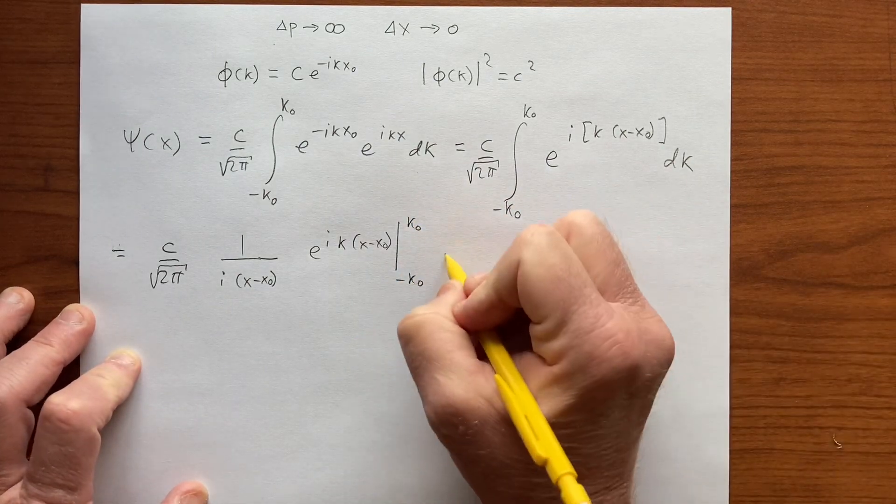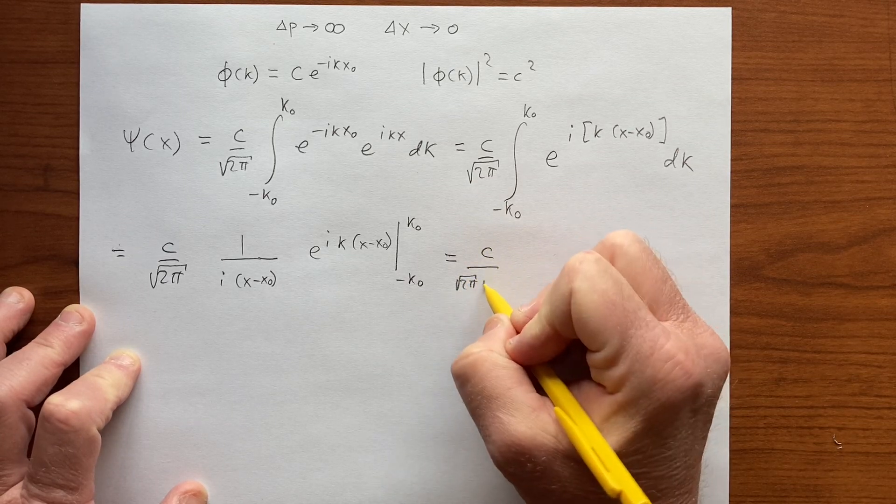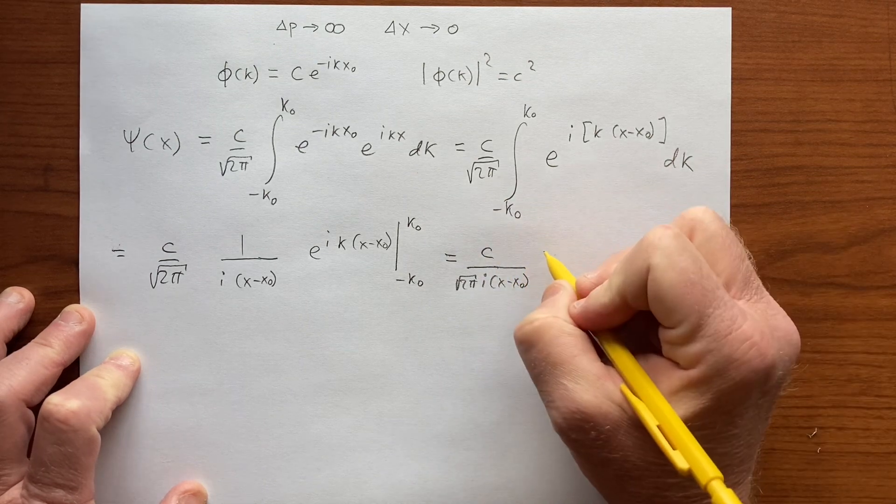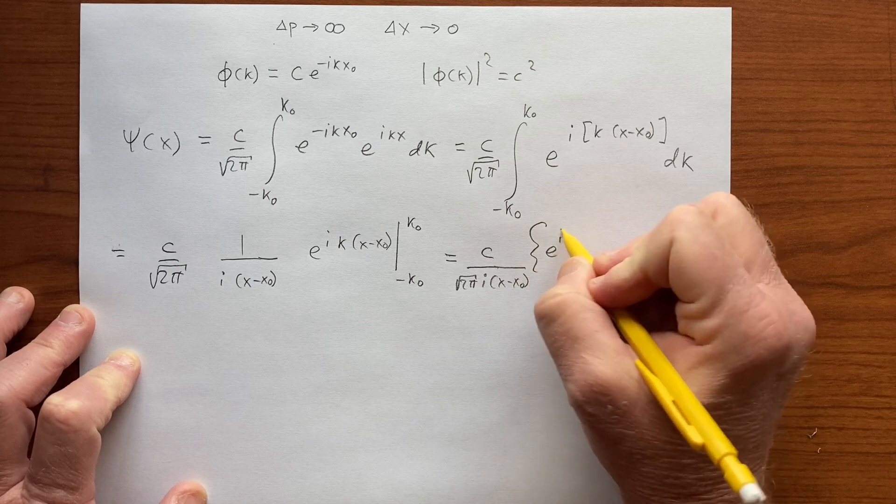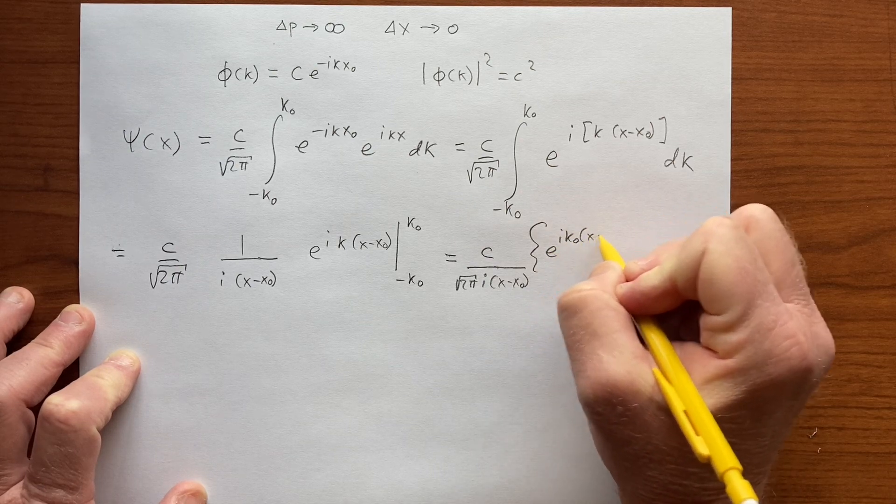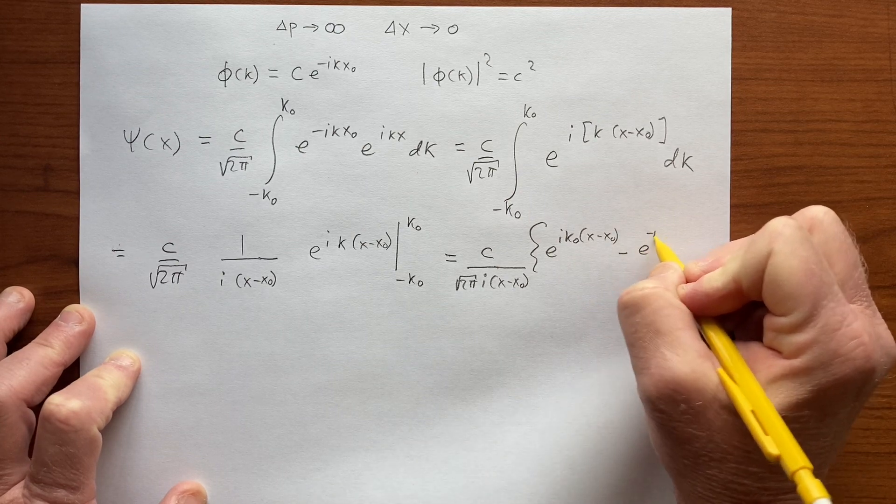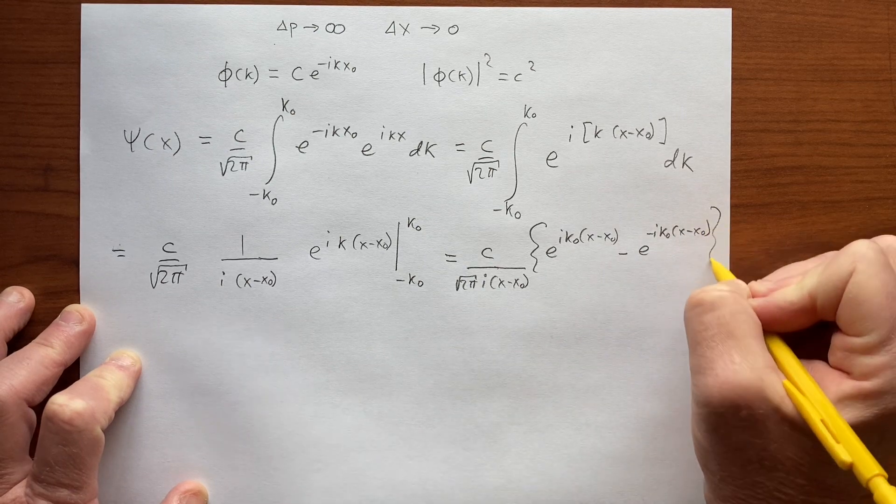So this looks like c over square root of 2π times 1 over i(x minus x₀) times [e to the i k₀(x minus x₀) minus e to the negative i k₀(x minus x₀)].